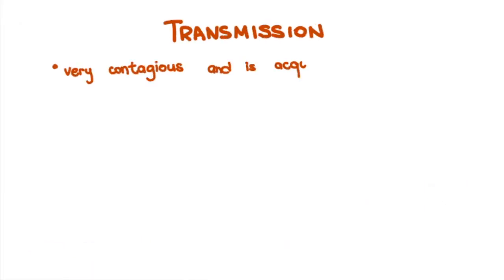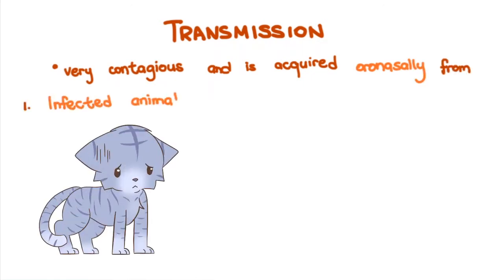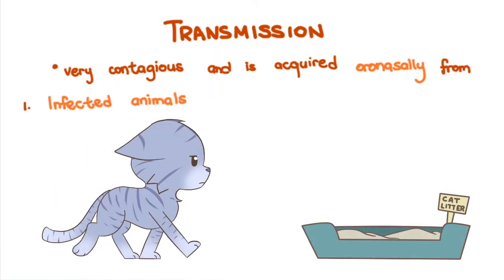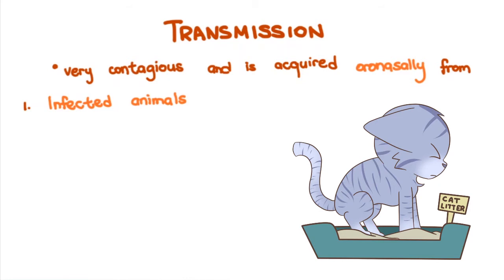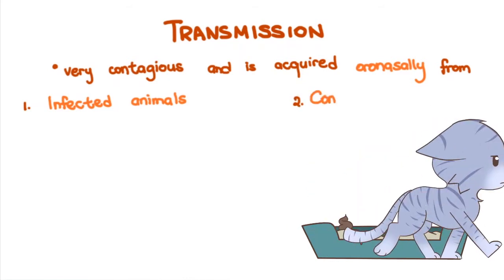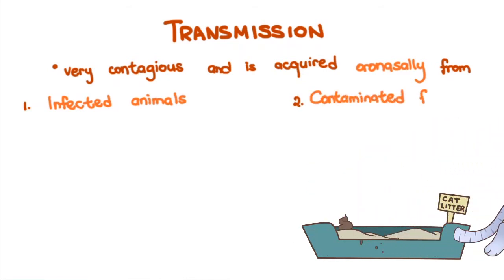Transmission: Feline panleukopenia is very contagious and is acquired oronasally from infected animals, where the virus is shed primarily through their feces, but may also be present in other bodily secretions, and from contaminated fomites. Being a non-enveloped virus, feline panleukopenia is very stable in the environment.